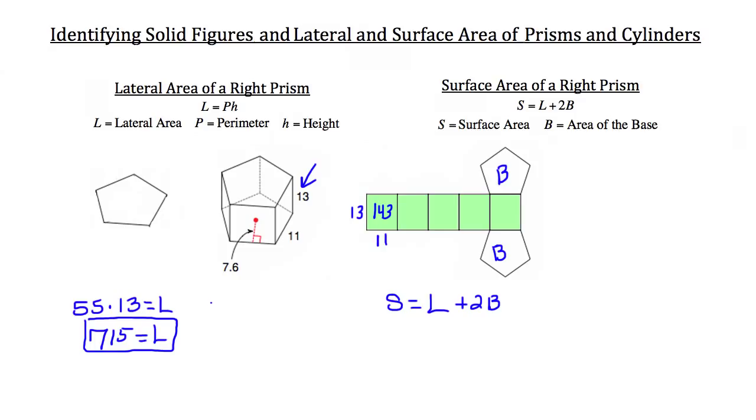So we know that the area of any pentagon is equal to one-half the apothem times the perimeter, and we know that the perimeter of that pentagon was 55 units. So now let's solve for the apothem.